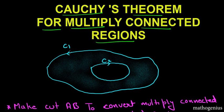According to the positive sign convention, this arrow and this arrow — our left hand will be in the region. We have to prove Cauchy's theorem, which is integration along these two curves, that integration along C is 0. We will first convert this multiply connected region to a simply connected region by making a cut here, which we name AB.